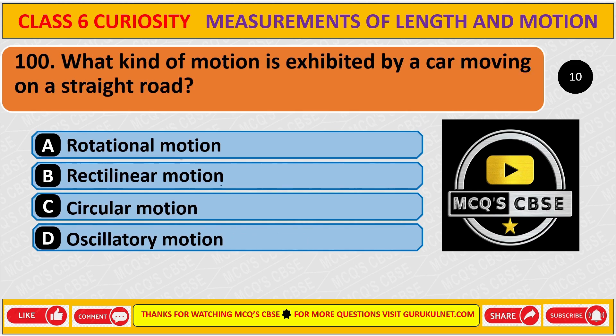What kind of motion is exhibited by a car moving on a straight road? The correct answer is B, rectilinear motion.